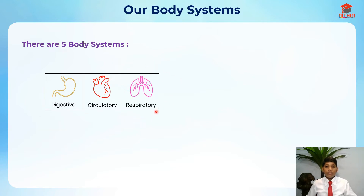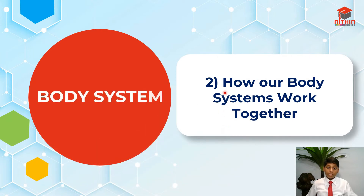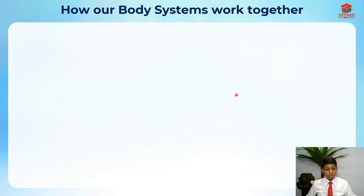Fourthly the skeletal system, and finally the muscular system. I've already gone through the digestive, circulatory, and respiratory systems in previous videos, so the skeletal and muscular systems are new. In the second segment of this video I'll go through how our body systems work together using a concept map.